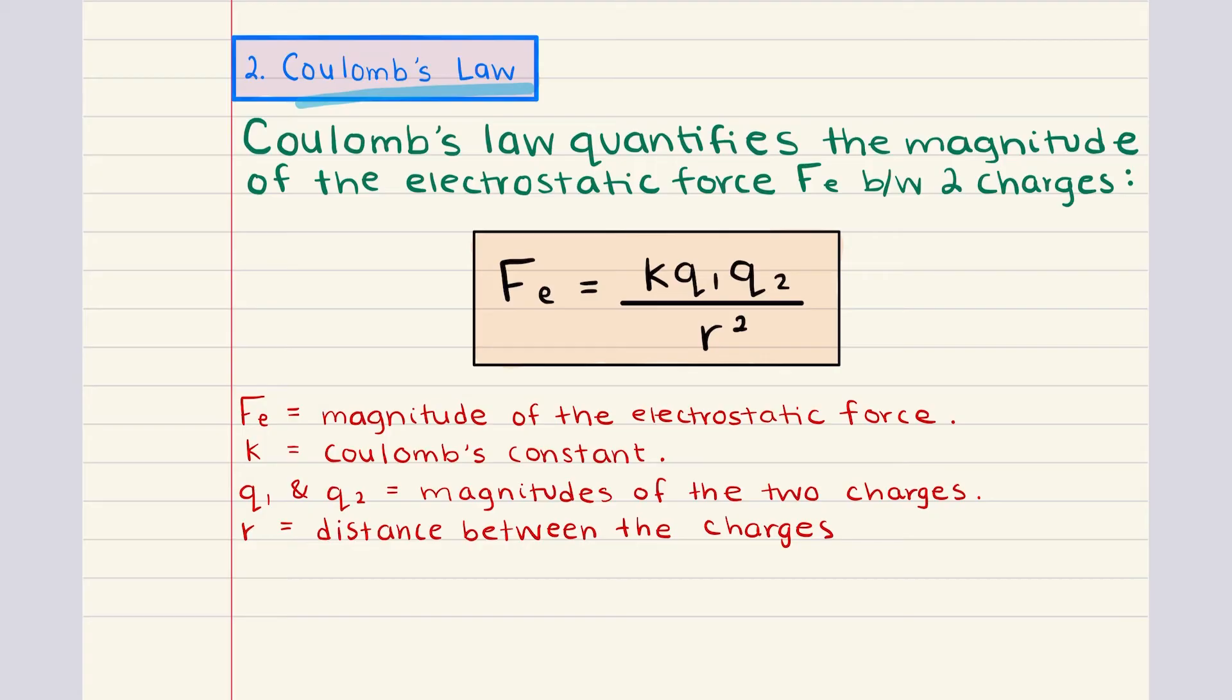Coulomb's Law quantifies the electrostatic force between two charges. This force is central to electrostatics because it describes the strength and the behavior of the force acting between charged objects. The equation for Coulomb's Law is shown here. Fe is the magnitude of the electrostatic force between two charges, and that's equal to K, which is Coulomb's constant, multiplied by Q1 and Q2, where Q1 and Q2 are the magnitudes of the charges involved. And this is all divided by R squared, where R is the distance between the two charges.